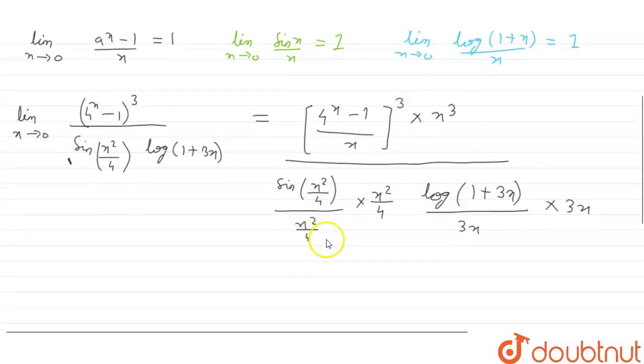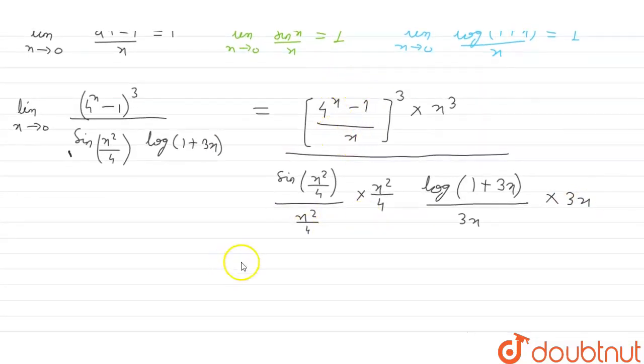It is made: 4 to the power x minus 1 upon x we can write in this place ln 4 whole cube into x cube whole divided by, in the place of sin x square by 4 divided by x square by 4, we can write 1. So 1 into x square by 4 which becomes x square by 4 into log of 1 plus 3x divided by 3x.